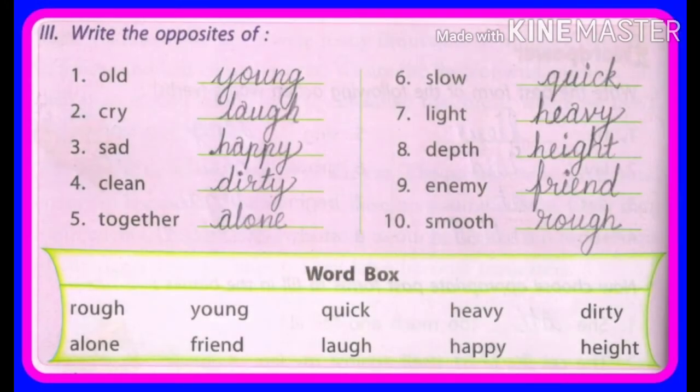Next exercise. Write the opposites. हमें क्या करना है? इनका उल्टा लिखना है — opposite लिखना है. यहाँ पे नीचे word box दिया गया है, word box में से ढूंढ के लिखना है. Number one: old — young. बुजुर्ग, जवान. Number two: cry — laugh. रोना, हँसना. Number three: sad — happy. दुखोना और खुशोना.